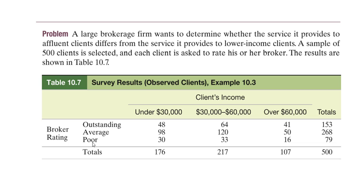We have three levels of broker rating: outstanding, average, and poor. We have three categories of client income: under $30,000, from $30,000 to $60,000, and greater than $60,000 USD.